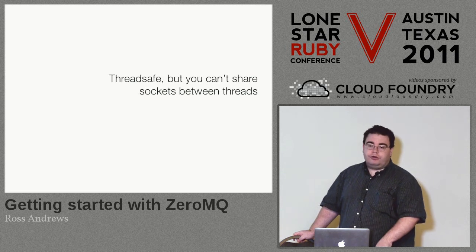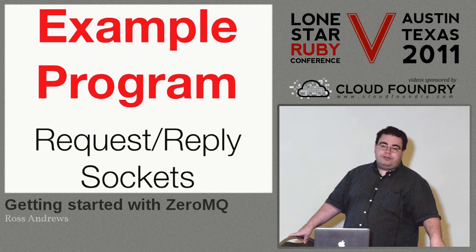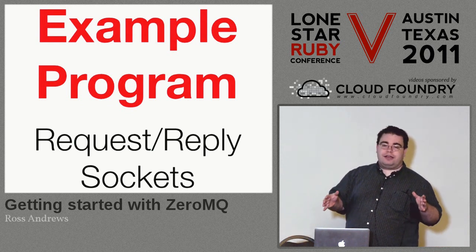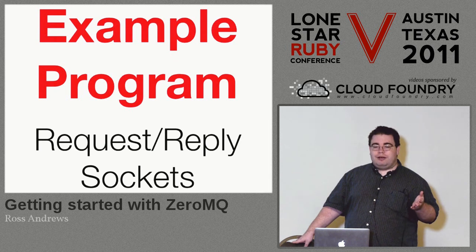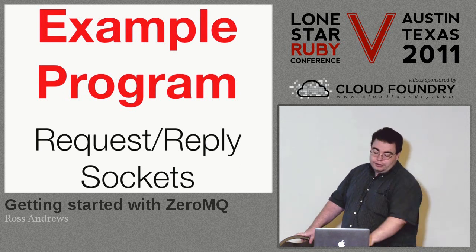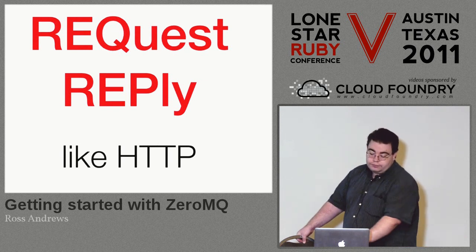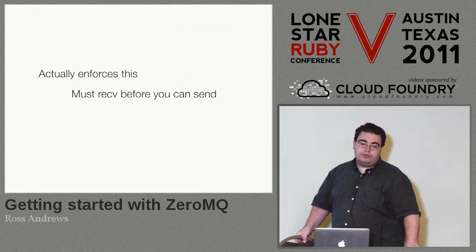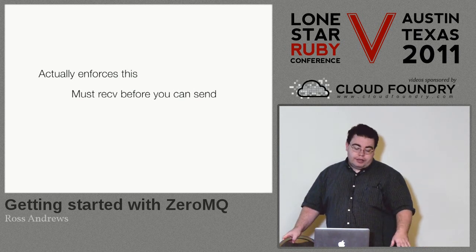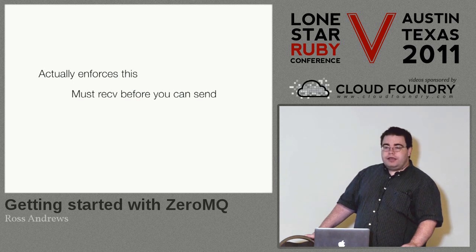ZeroMQ has different kinds of sockets — these are common network architectures. The first and most common one is request-reply: you send a request and you get one reply back. HTTP is the canonical example of this. It actually enforces this, unlike TCP: you have to alternate sends and receives. If you don't, that's an error it's going to tell you about.